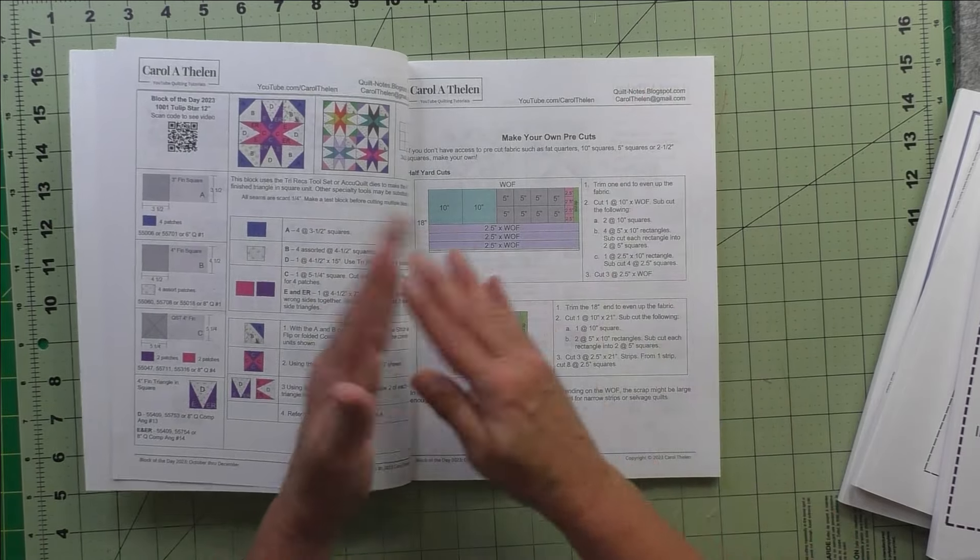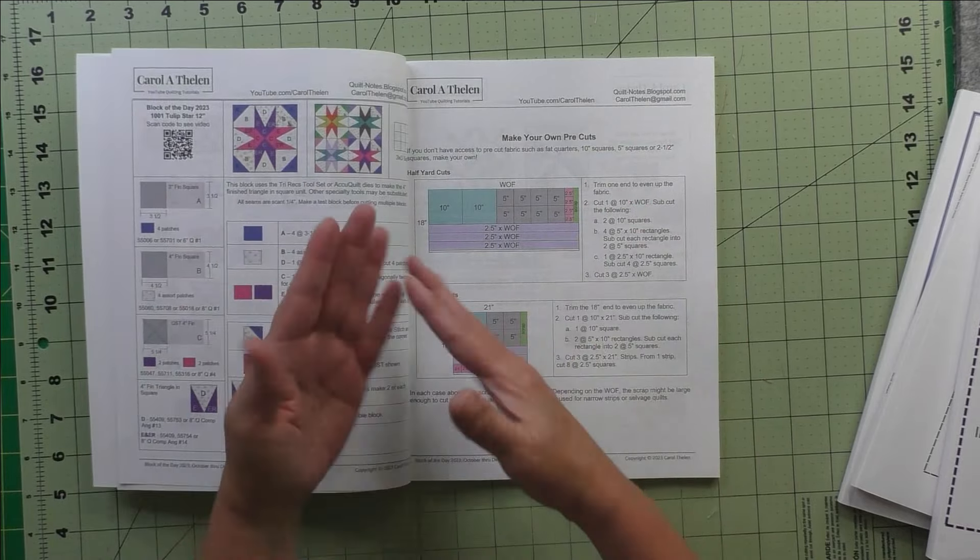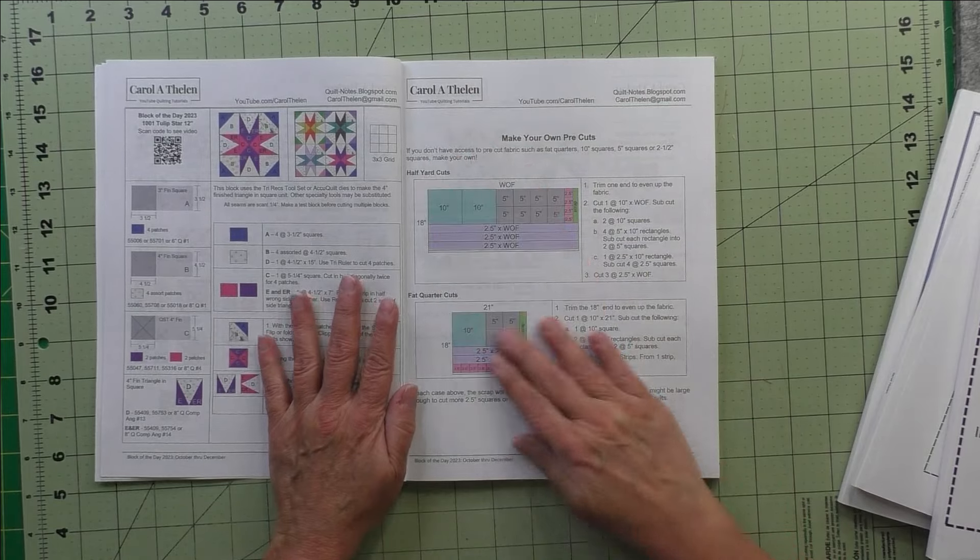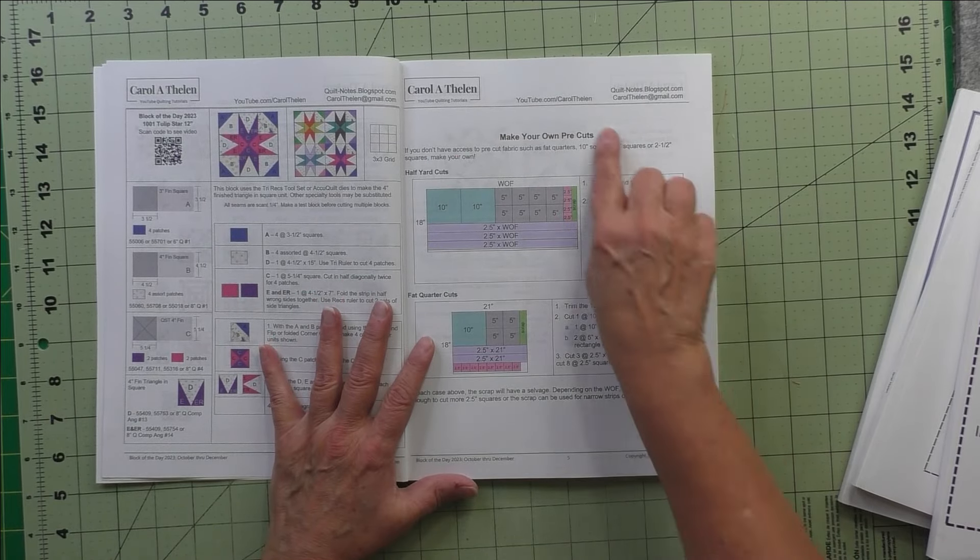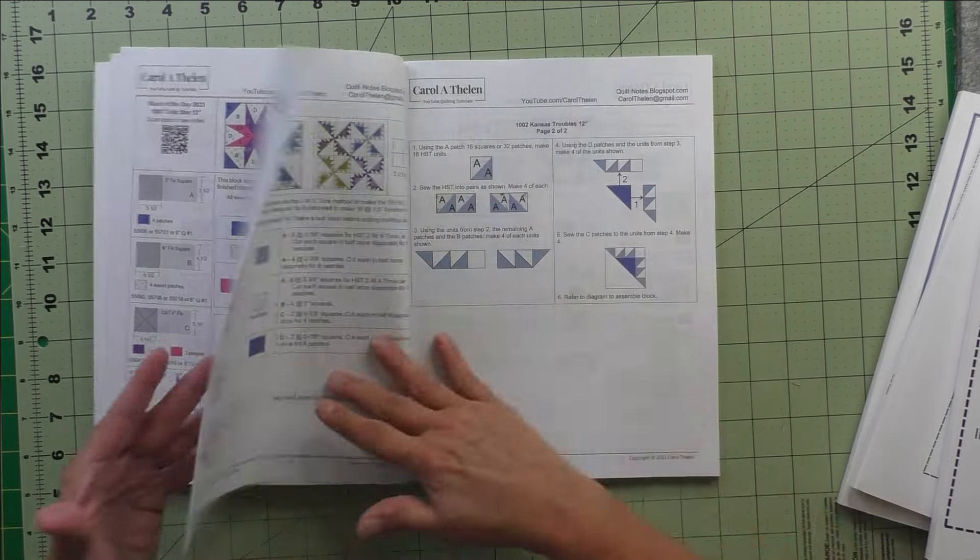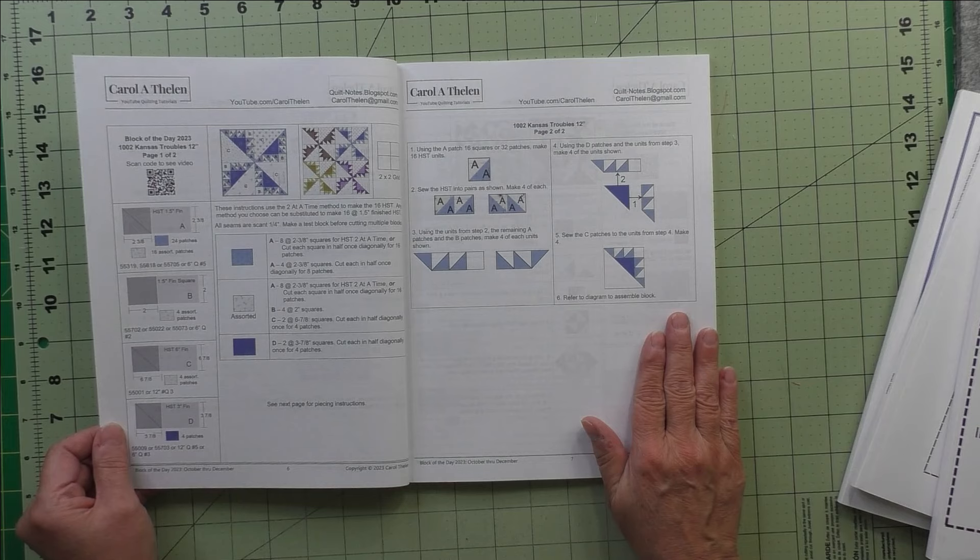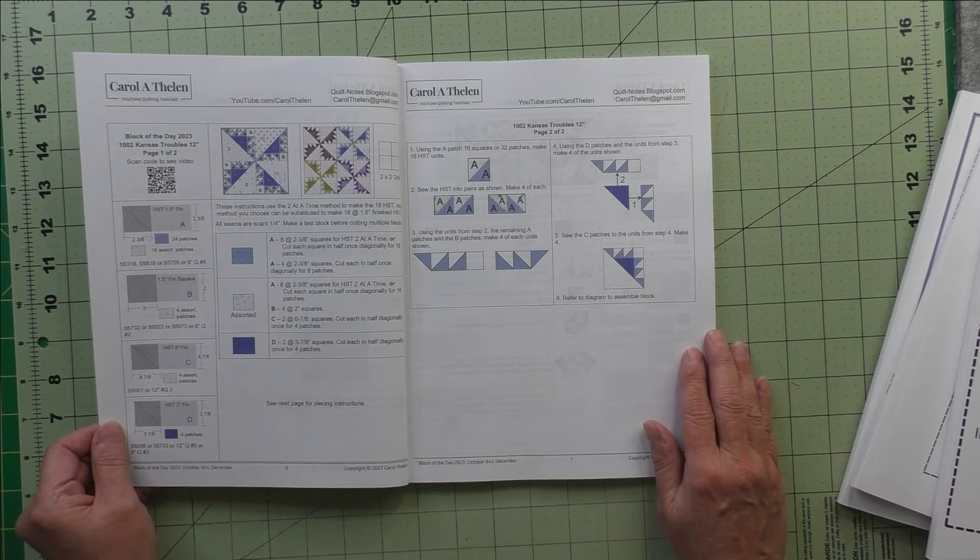On pages where I have an empty page, because I wanted to make sure if the block was two pages long you could see them open this way, then I fill in some interesting information. This one is Make Your Own Pre-cuts, that's on page five. But here and here is one that takes two pages, this Block of the Day Kansas Troubles 12 inches.